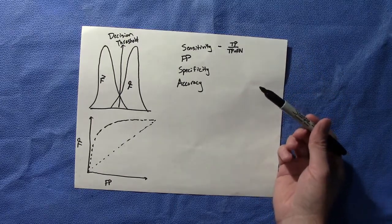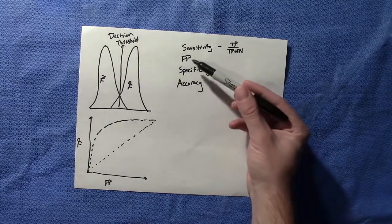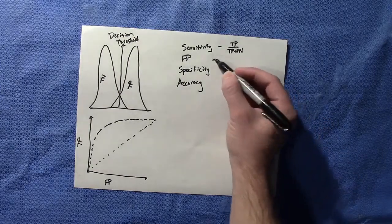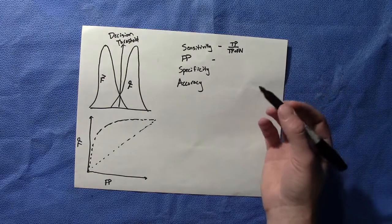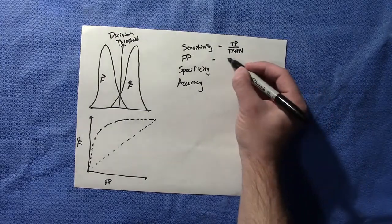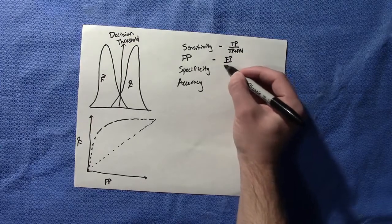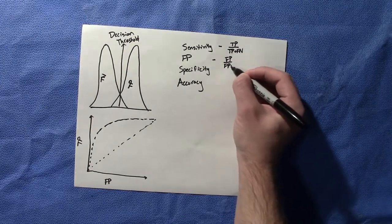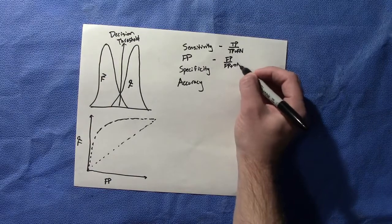Next we want our false positive fraction, and that is calling something positive, saying okay there is cancer when really there isn't. So that is equal to our number of false positives over our false positives plus our true negatives.